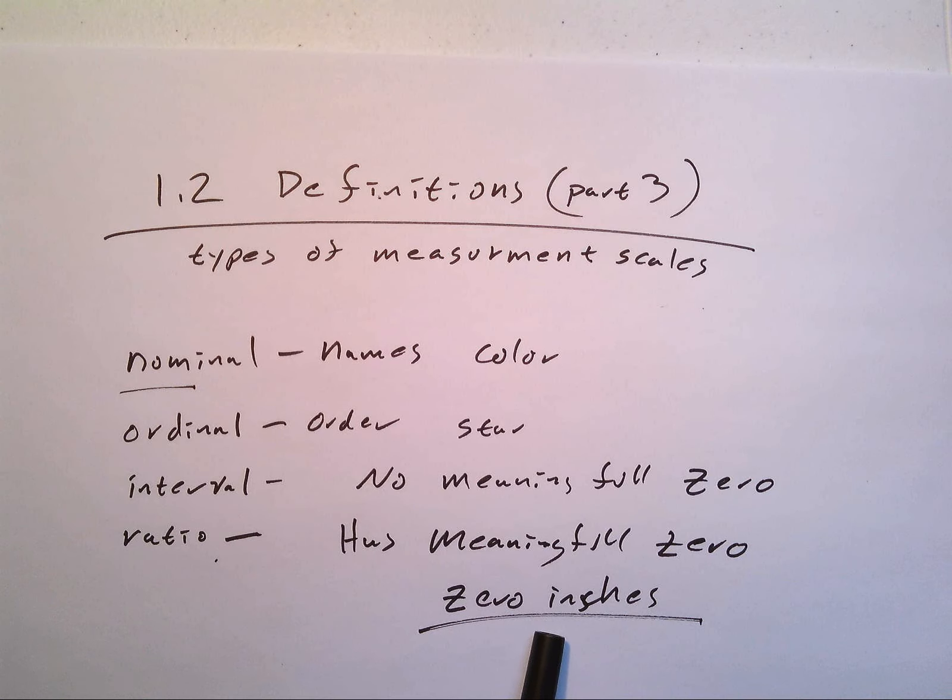Now the next two get confused a lot. An interval measurement not only has an order but it scales up and it scales down. A four star rating in Netflix does not mean that the movie is twice as good as a two star rating. It's just a way to separate the categories. Same way a five star is not five times better than a one star.